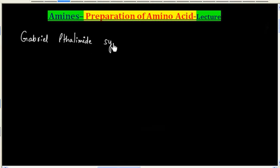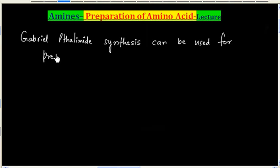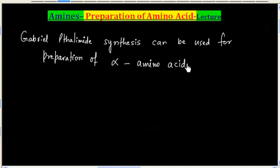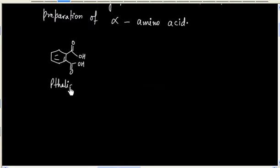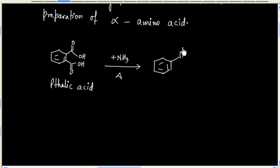Thilemoid synthesis can be used for preparation of alpha amino acid. This molecule is thialic acid, and when this is treated with ammonia and the mixture is heated, we get thalamide.